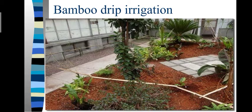Bamboo drip irrigation is found in Assam, Nagaland, and other eastern states where water is present in very low amounts. Rainwater is carried from forest areas or hilly areas to the lower parts through a bamboo system.